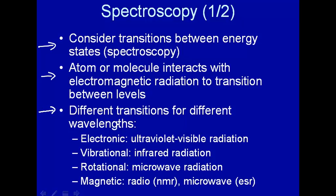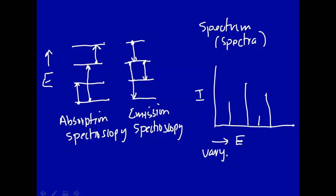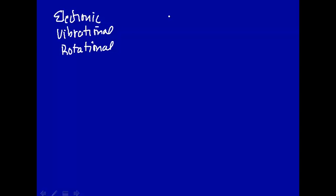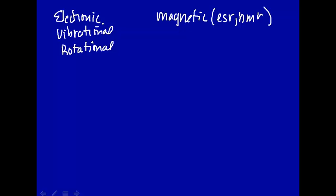There are different wavelengths for different transitions. We've talked about electronic, vibrational, and rotational energy levels in our study of quantum mechanics. And then we have a fourth one which we haven't quite mentioned yet, but we will at the end of this spectroscopy unit: magnetic — specifically ESR, electron spin resonance, and NMR, nuclear magnetic resonance.